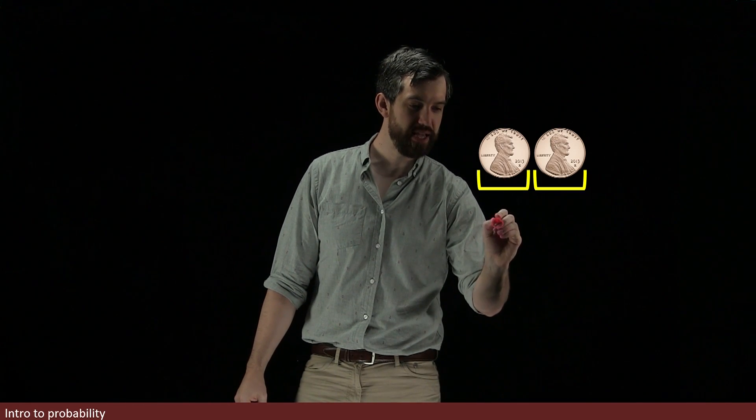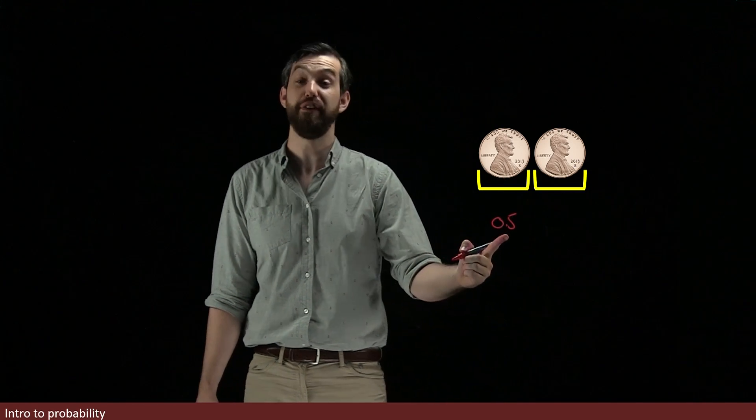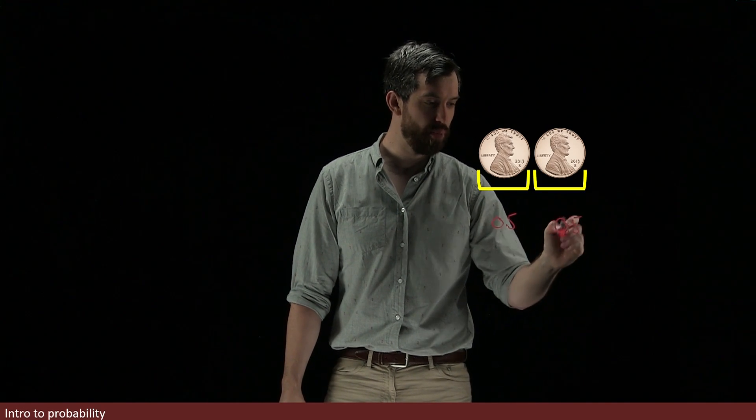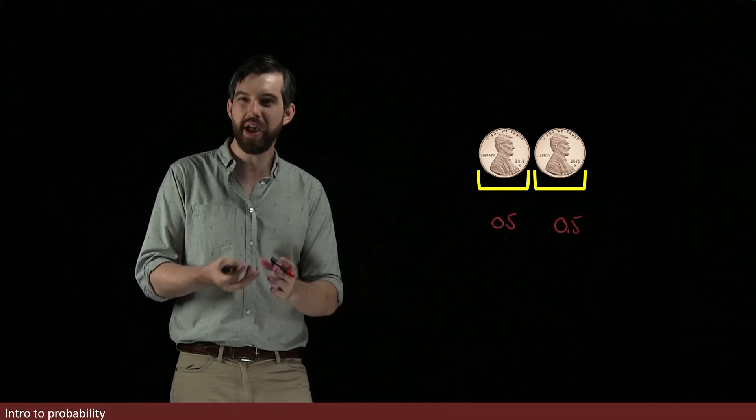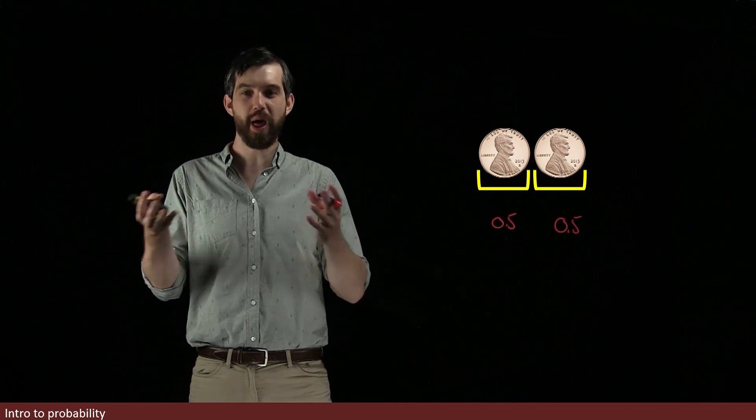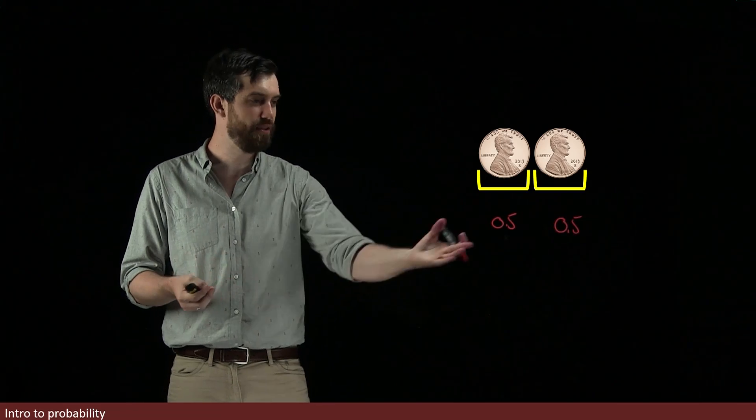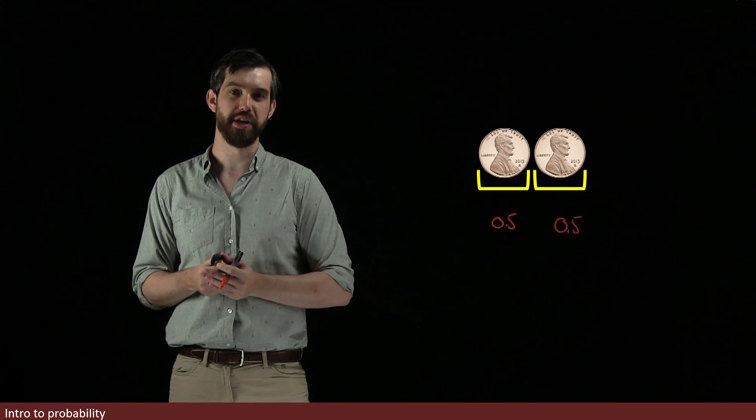So this one here I'm going to say is going to be 0.5 or a 50% probability. And then this one here is going to be 0.5 or a 50% probability. By the way, I don't mind whether you write it as a decimal 0.5 or whether you multiply that by 100 and put a percent in there and call this 50%, whichever is more convenient for you.